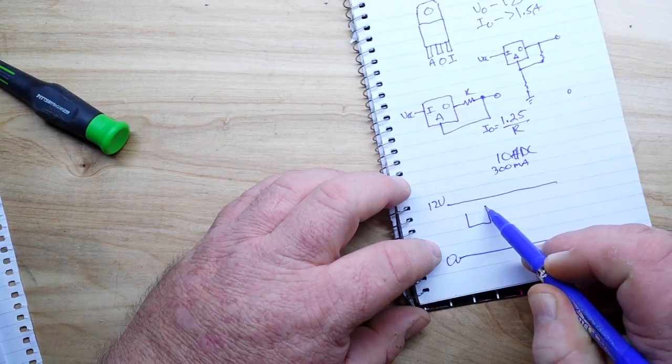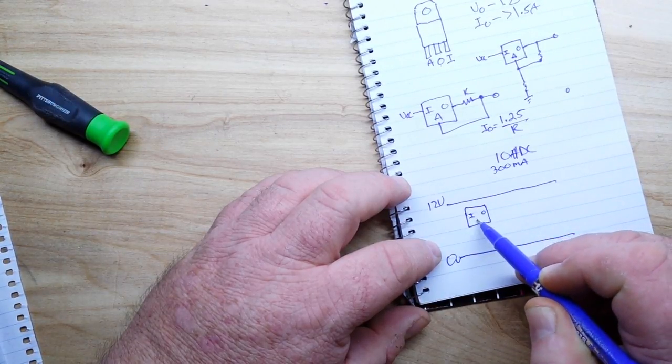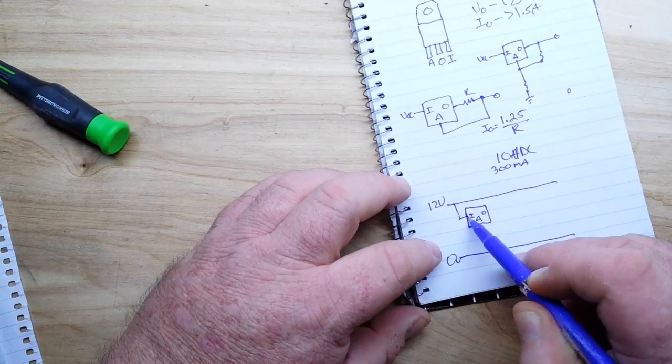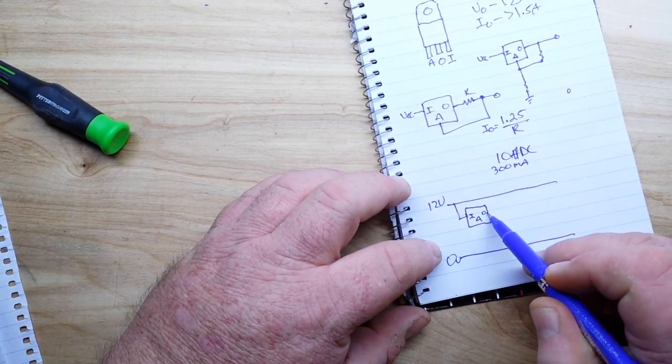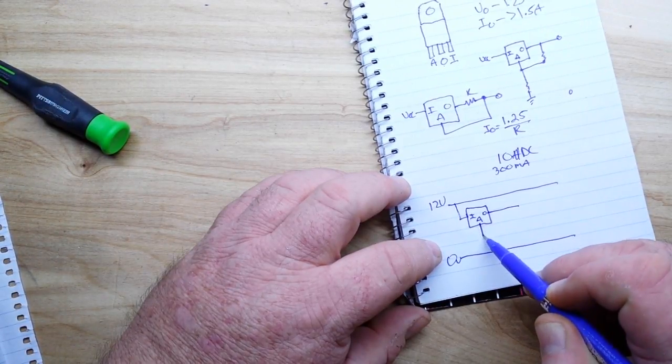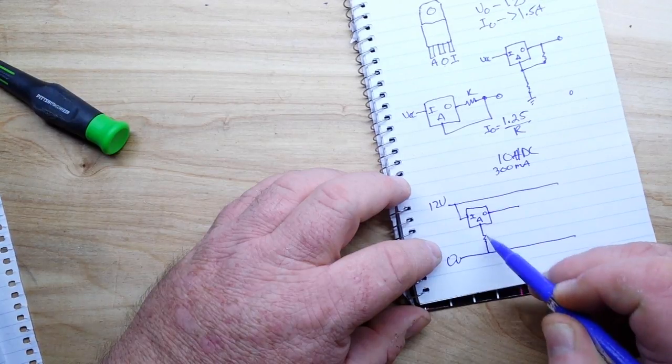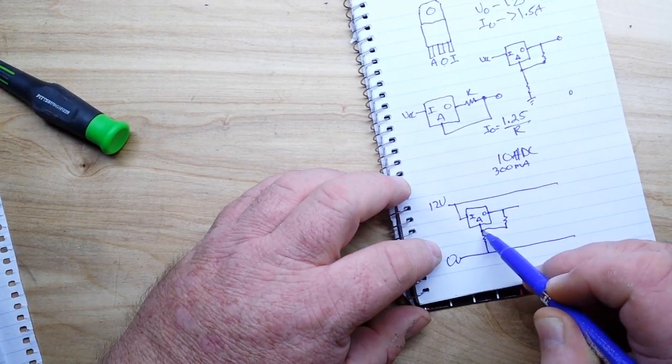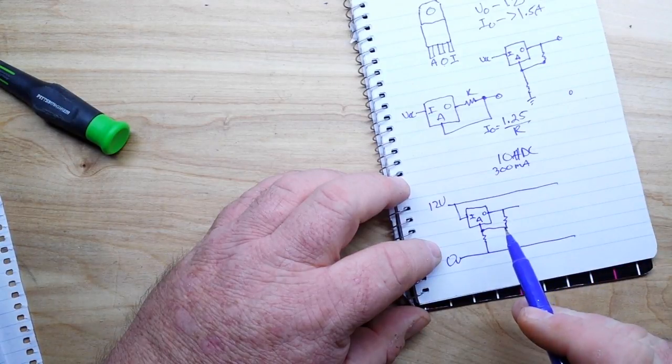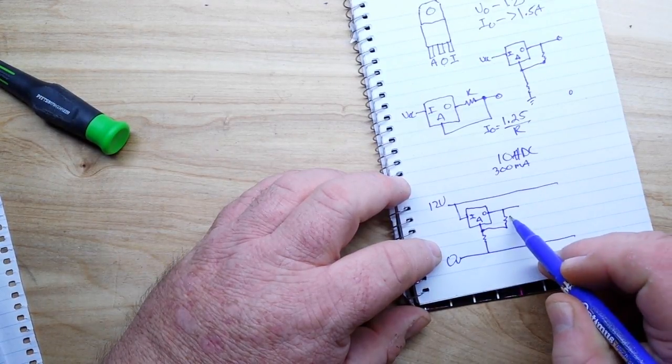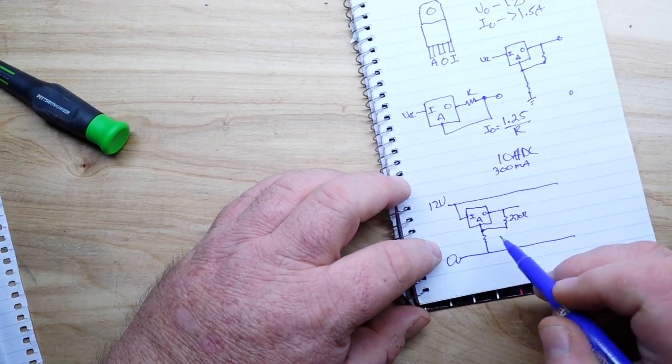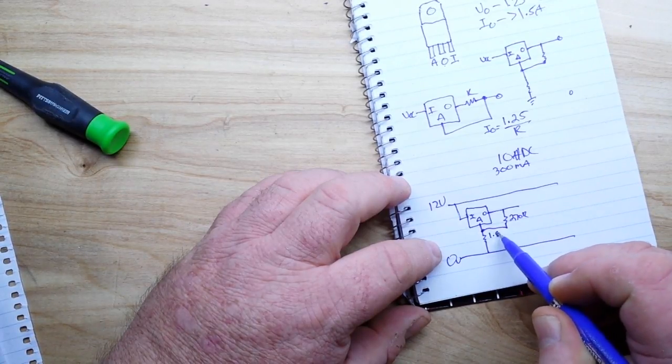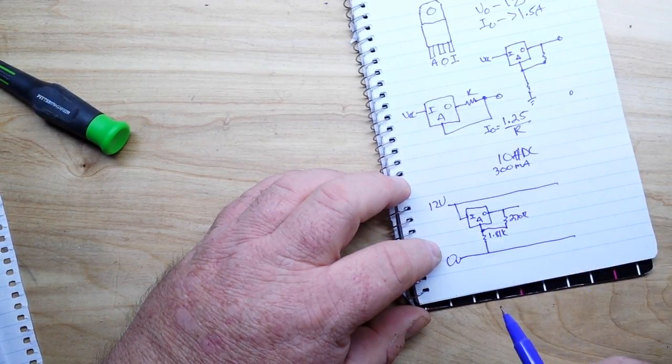So here's our first LM317: input, output, adjust. Our input goes there, our adjust goes like that to a resistor to ground. Another resistor here, we create a voltage regulator. If those values happen to be 270 ohms and 1.81k, then